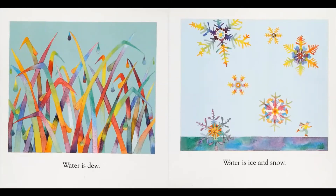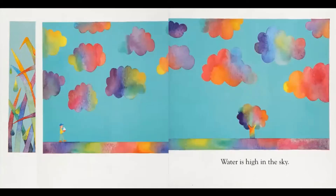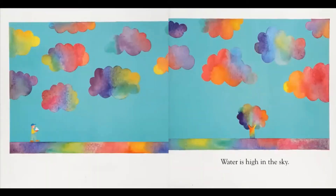Water is ice and snow. Could you imagine if snowflakes really were rainbow colors and not just white? That'd be so awesome. Water is high in the sky. How is water high in the sky? It's because clouds are made of tons and tons of tiny little water droplets. That's where the rain comes from — clouds.